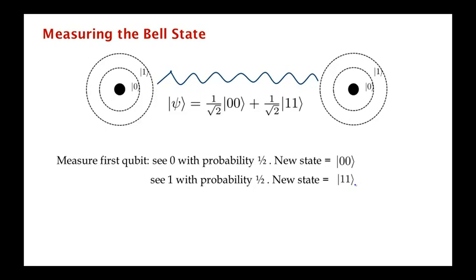then the new state of the system is 0,0. And if we see a 1, the new state is 1,1. Which means that now if the second particle is measured, no matter how far it is from the first particle, the outcome is exactly the same, the outcome of the measurement is exactly the same as the outcome of the first measurement.